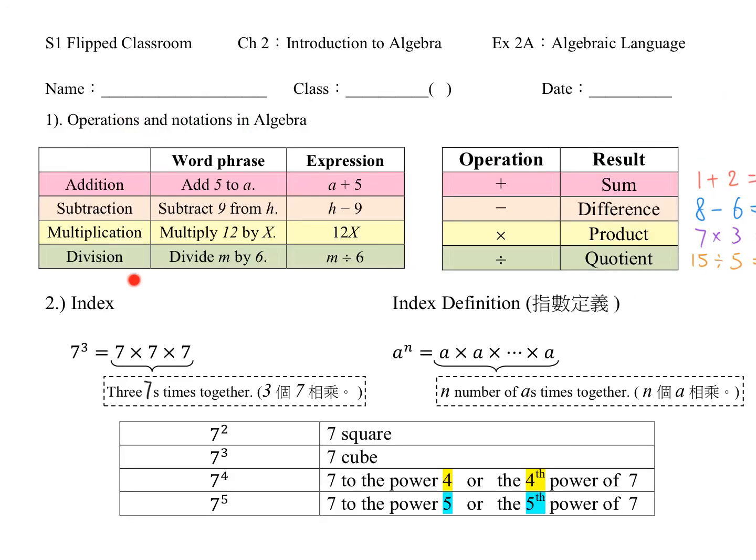And we've finished part 2 of this video. Thank you so much. We hope you can learn operations: addition, subtraction, multiplication, division, and know the name of the results: sum, difference, product, quotient. And we also go through index and its definition. We can look at 7 times 7 times 7, which is 3 sevens times together, as an example to think about the index definition, 8 to the power n. Thank you so much for your learning. We hope it will be fruitful for you. See you in the next video. Bye.